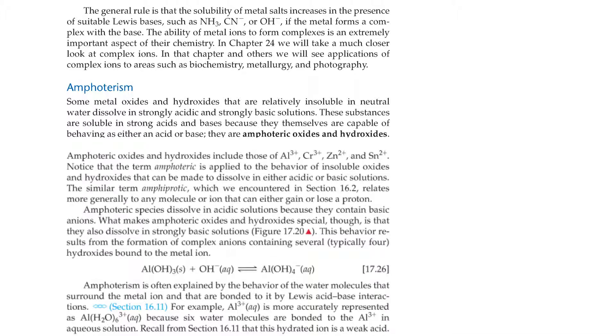Amphoterism. Some metal oxides and hydroxides that are relatively insoluble in neutral water dissolve in strongly acidic and strongly basic solutions. These substances are soluble in strong acids and bases because they themselves are capable of behaving as either an acid or base. They are amphoteric oxides and hydroxides. Amphoteric oxides and hydroxides include those of aluminum, chromium, zinc, and tin.